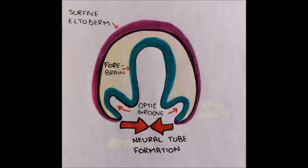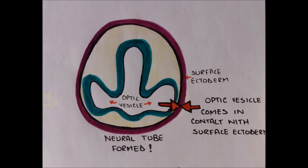Basically, on the 22nd day, shallow grooves appear on either side of the forebrain. These are called optic grooves. With closure of the neural tube, the optic grooves become the optic vesicles.